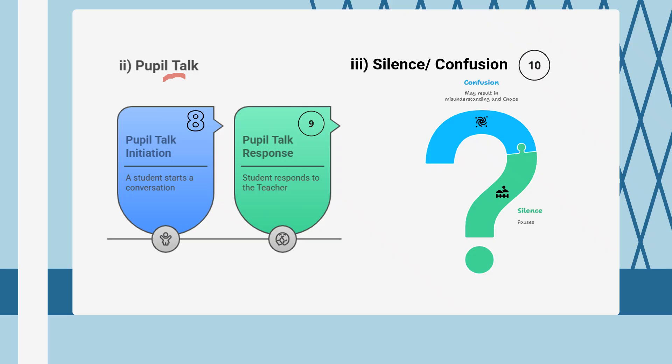The third category is silence or confusion, where there will be no conversation, or there will be some chaos — like when a large number of students are talking at the same time. The number allotted for this category is fixed, so it is better to memorize it.